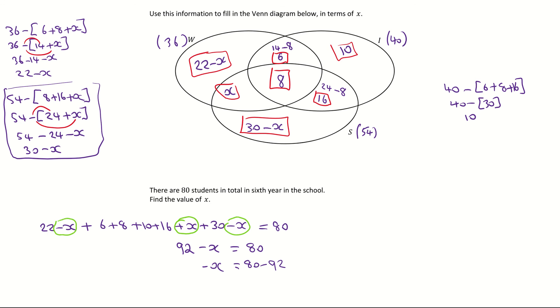So that's minus x is equal to 80 minus 92, which is minus 12. And change the signs and multiply across by minus. So therefore, x is equal to positive 12. And that is the value of the missing letter x.